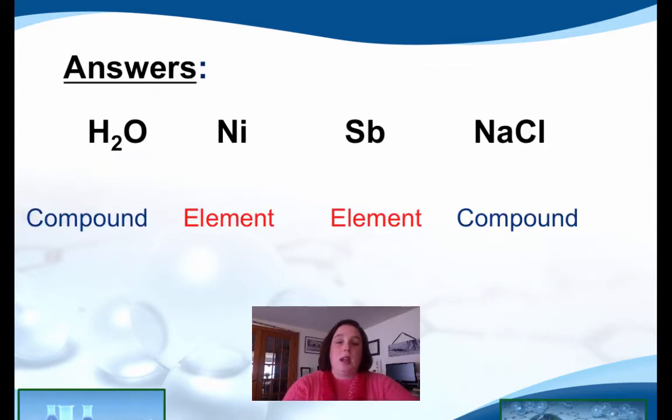Hopefully you got H2O was compound because you've got two capital letters, hydrogen and oxygen. The next one, Ni, is nickel. That only has one capital letter. We can also find nickel on the periodic table. The next one, Sb, is antimony, happens to be my initials, and that's an element also found on the periodic table. And the last one is a compound, NaCl. You probably have this next to the pepper on your dinner table. This is salt.